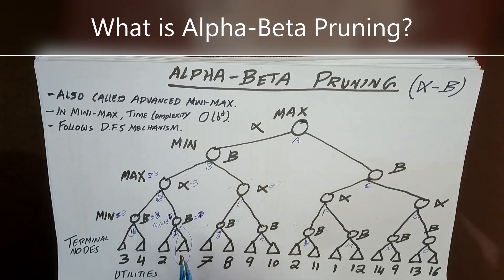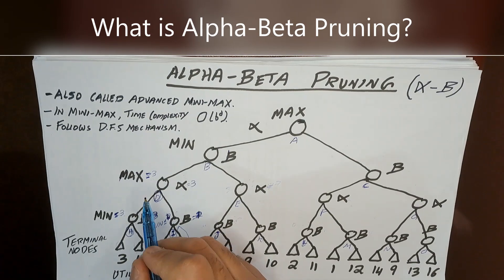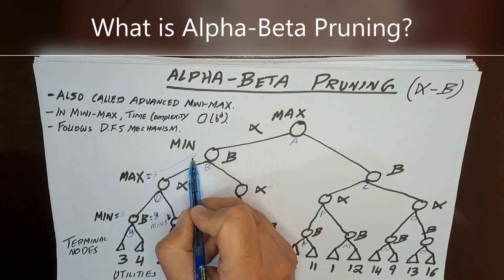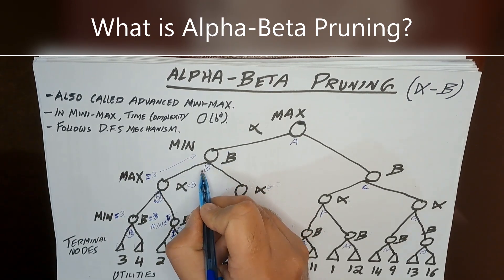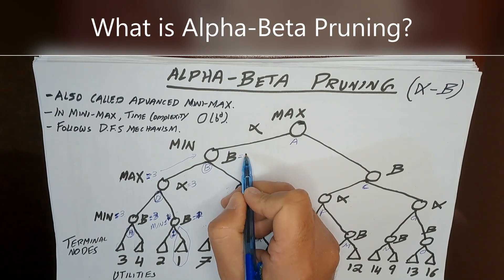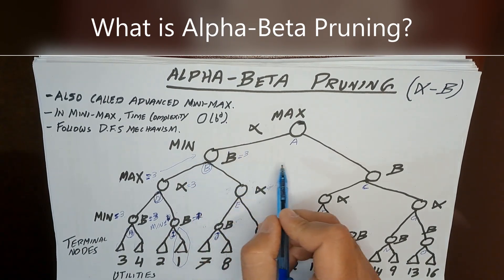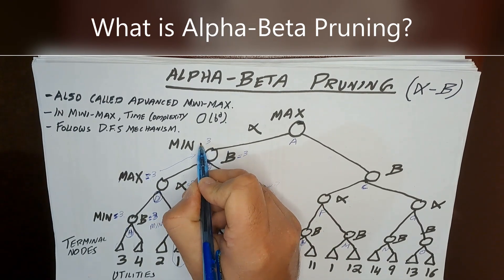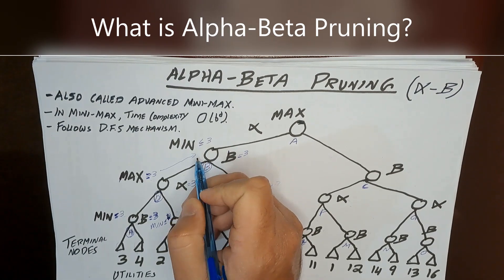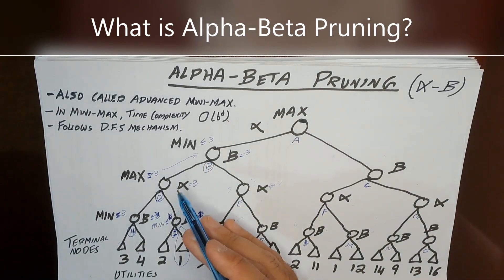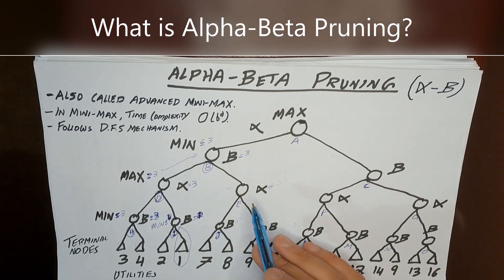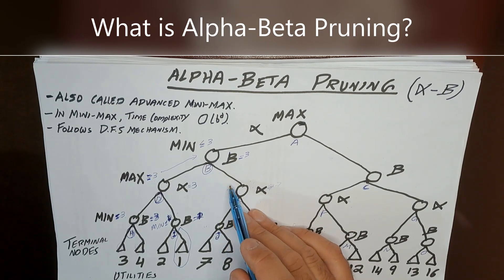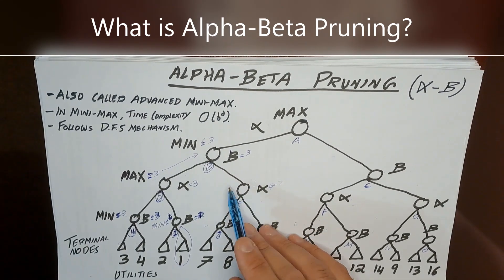Once Max's value is fixed at 3 it is passed up to the higher level — moving up to beta at node B. The value of beta at node B becomes 3. Here it is Min's turn, and Min currently has value 3 but will try to look for an even smaller value, because Min wants to minimize Max's utility. So after the left-hand side, node B will search the right-hand side.